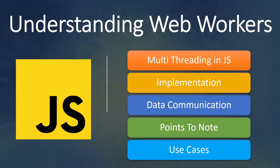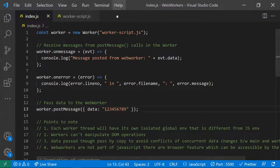In this video, let's try to understand web workers — a way of executing multi-threading in JavaScript — and how to use them, the data communication between the main thread and the worker thread, a few points to note while working with web workers, and common use cases. JavaScript is single-threaded, meaning at any point it can only run one script at a time. If you give any large script to be executed, the page becomes unresponsive and the user can't do any action until that script is completely executed, which means you are blocking the UI completely.